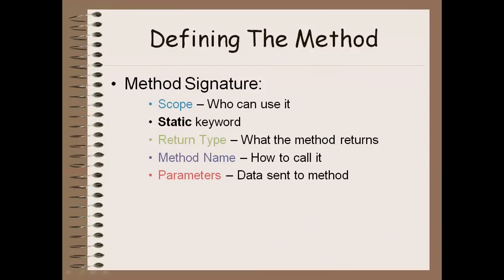So to define a method, if you recall from before, you have to have a scope, which is going to tell you who can use it. This can be either private or public. Private meaning only your current program can use it. Public meaning programs outside of your current class can use it. The static keyword, which we'll talk about later when we get into classes. But just know for now that everything you have has to have the static keyword in it.